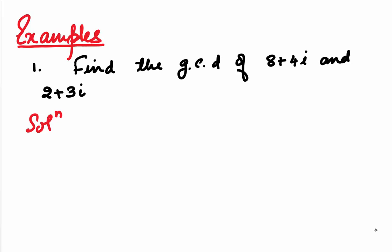Let's look at some examples to see how GCD is found. In question number 1, we are asked to find the GCD of 8 plus 4i and 2 plus 3i. We would be using the Gaussian division algorithm.